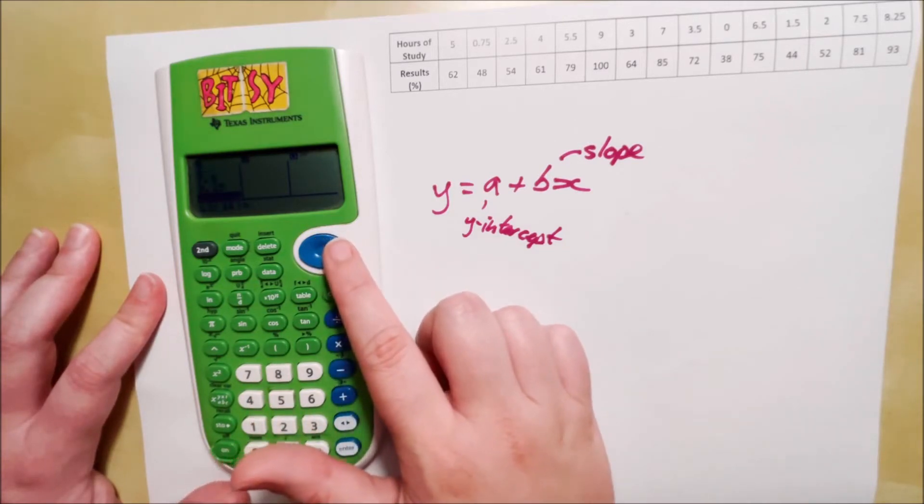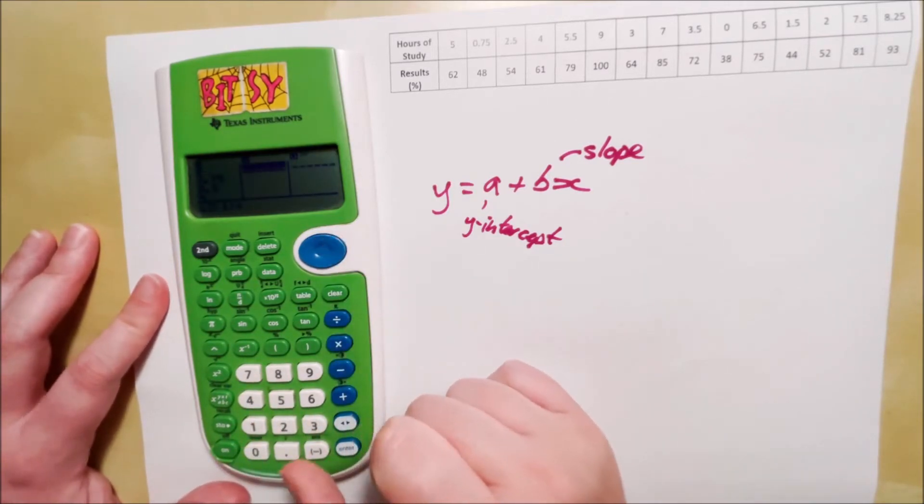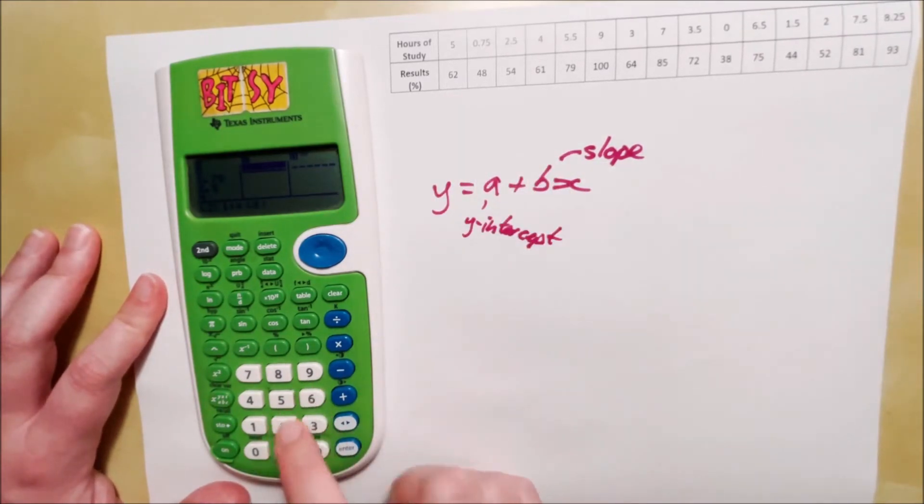There we go. Arrow across to your next column and start entering in the response variable. 62, enter, 48, enter, etc.